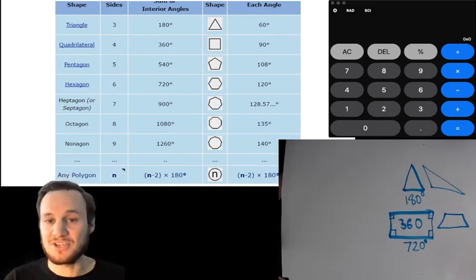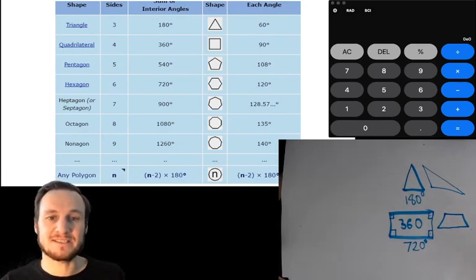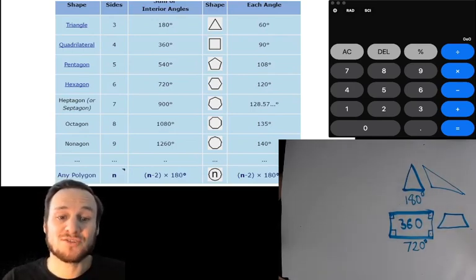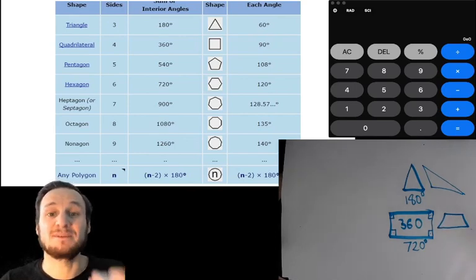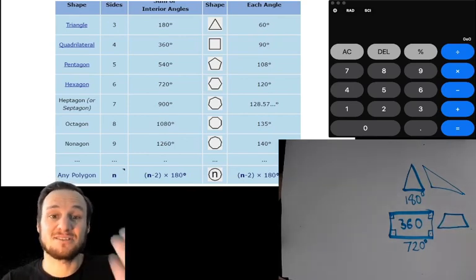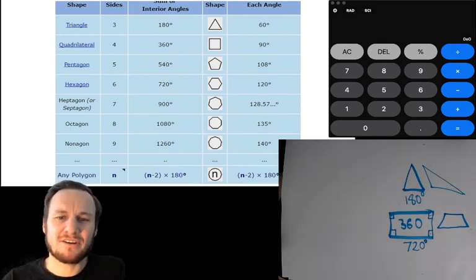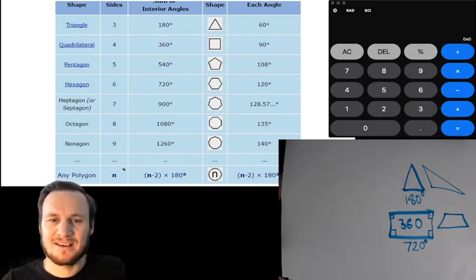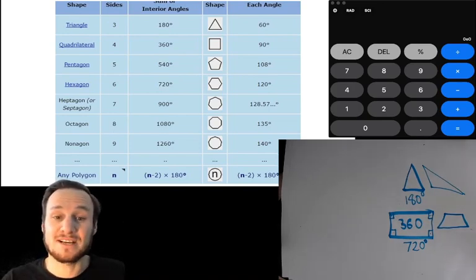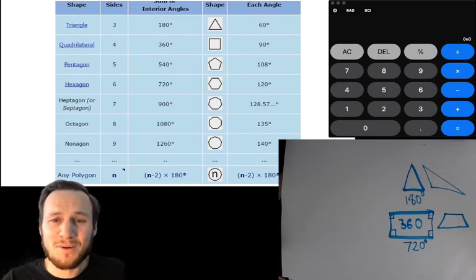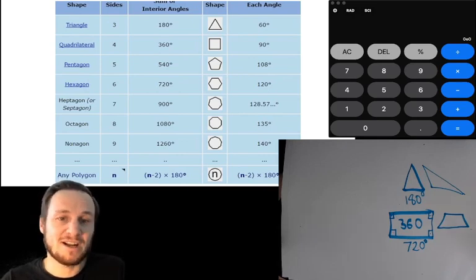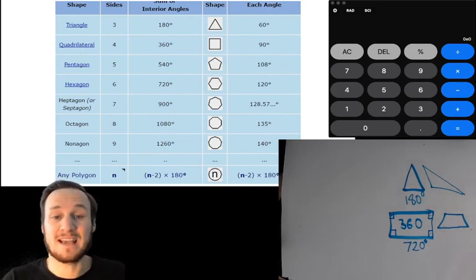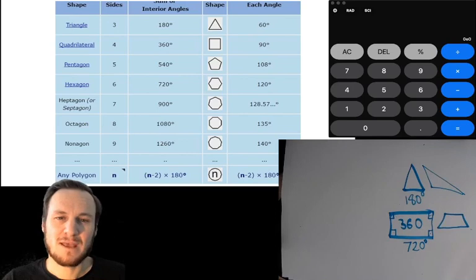If we went to a chart and we looked at what the angles are, we can see that all triangles add up to 180 and each angle is 60. All quadrilaterals are up to 360, and if they were all equal it'd be 90 plus 90 plus 90 plus 90. Then pentagons is 540 and each angle is 108. Hexagons are 720 and each angle is 120. Heptagons 900, each angle is 128.57. Octagons 1080, and each of them of those, nonagons 1260.